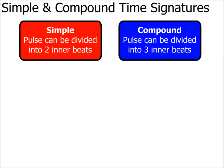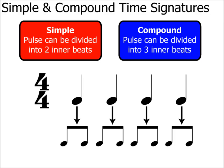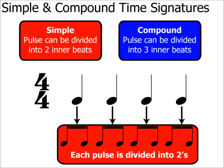So what do I mean by inner beats? Here's 4/4. We already know that this means that the beats are crotchets and that there are four of them in each bar. To determine whether 4/4 is a simple or compound time signature, we split the pulse — in this case a crotchet — into equal parts. Each crotchet can be split into two quavers. As the pulse can be divided equally into two, then 4/4 is a simple time signature.